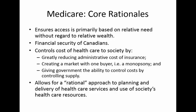The core rationales for Medicare: it ensures access for the services covered is primarily based on relative need without regard to relative wealth. It therefore protects the financial security of Canadians given the cost and unpredictable nature of health care expenses. It helps to control society's overall cost of health care by greatly reducing administrative expense involved in insurance. It creates a market for health care services with one buyer — the government — giving that buyer more bargaining power with doctors, hospitals, and other providers within the scope of Medicare, and giving government the ability to control costs by controlling supply. Medicare has worked in that way, perhaps at the expense of creating some of those waiting lists referenced earlier. More generally, a single payer approach is thought to create the opportunity for a more rational approach to planning and delivery of health care services and to the use of society's available health care resources.